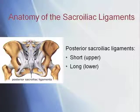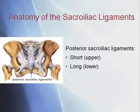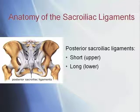The lower fibers are called the long posterior sacroiliac ligaments, and they travel in an oblique direction. They're attached to the third transverse tubercle, or bump on the back of the sacrum, to the posterior superior spine of the ilium, also referred to as the PSIS. In total, the sacroiliac ligaments consist of hundreds of thousands of fibers.